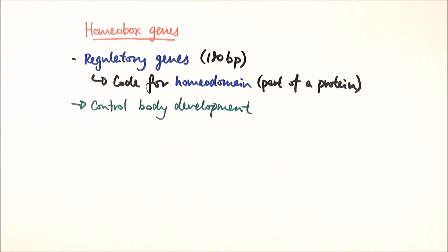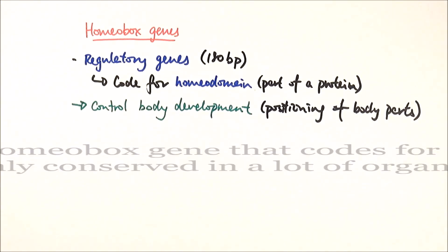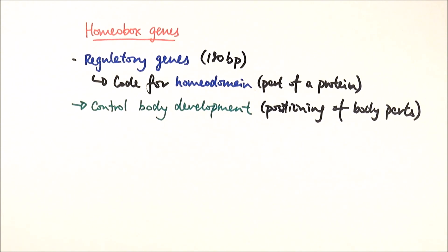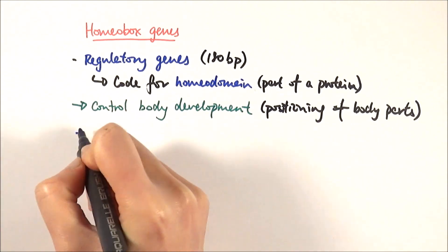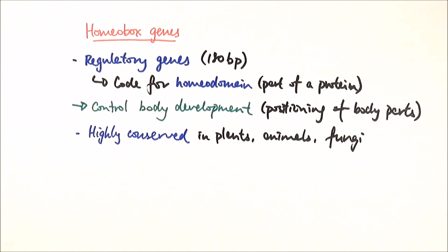The key function of homeobox genes is that they control body development — specifically the positioning of body parts. One example is the PAX6 gene, a homeobox gene found in many different organisms that controls the development of the eyes, determining whether eyes are positioned at the front or sides of the head.